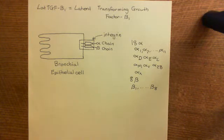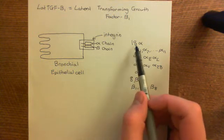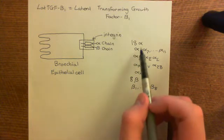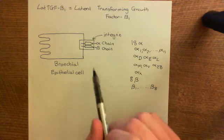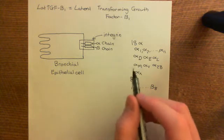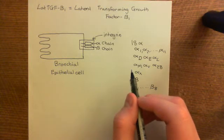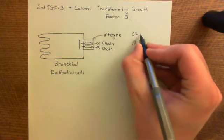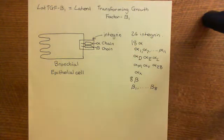In principle, the number of different integrins you could make would be 18 times 8, which equals 144 possible integrins. However, not all 144 are found in actual biology. Instead, around 24 of these 144 possible integrins are actually used in nature.